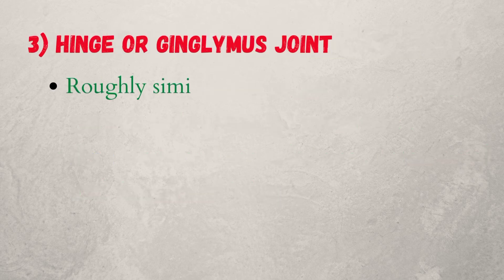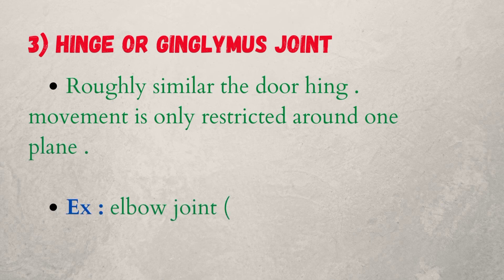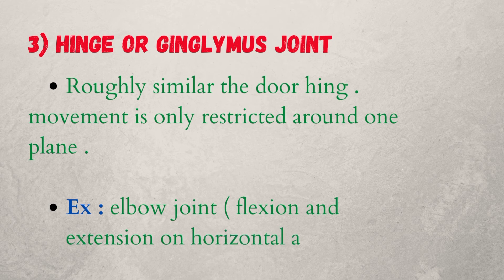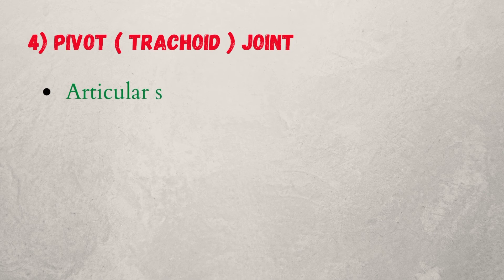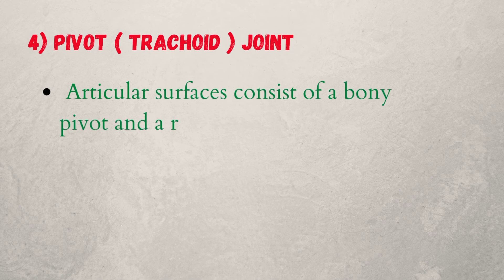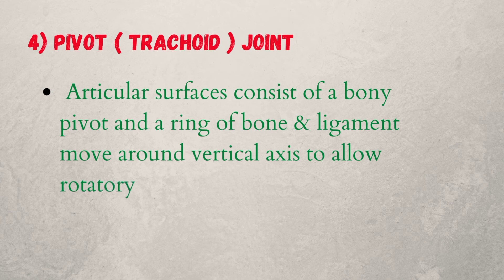Three, hinge or ginglymus joint — roughly similar to a door hinge; movement is only restricted around one plane. Example: elbow joint, with flexion and extension on a horizontal axis. Four, pivot or trochoid joint — articular surfaces consist of a bony pivot and a ring of bone and ligament, moving around a vertical axis to allow rotatory movement. Example: atlanto-axial joint.